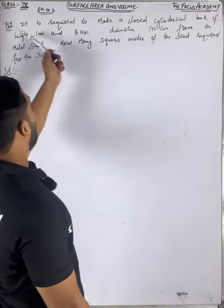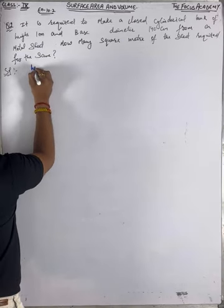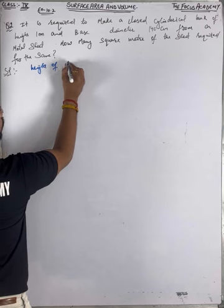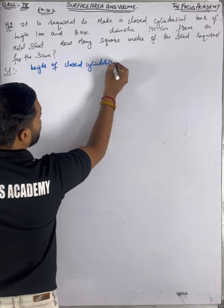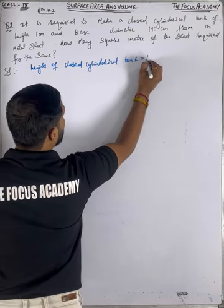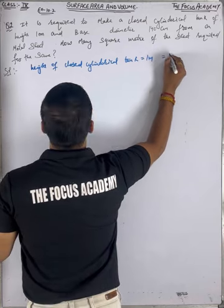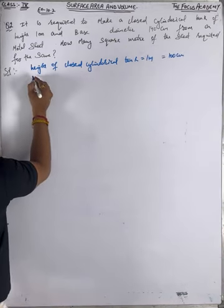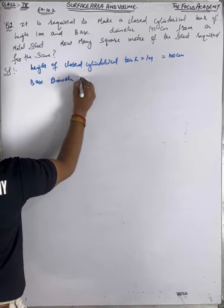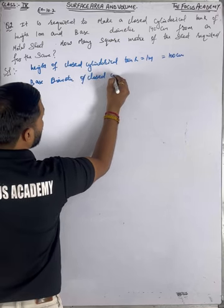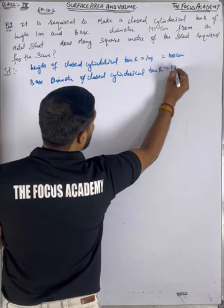It is required to make a closed cylindrical tank of height 1 meter. The base diameter given is 140 centimeters. Let's write: Height of closed cylindrical tank = 1 meter = 100 centimeters. You can write 100 cm if you like. Base diameter of closed cylindrical tank = 140 cm.